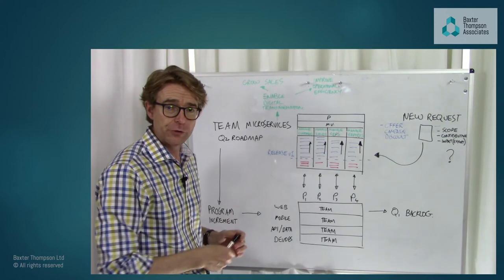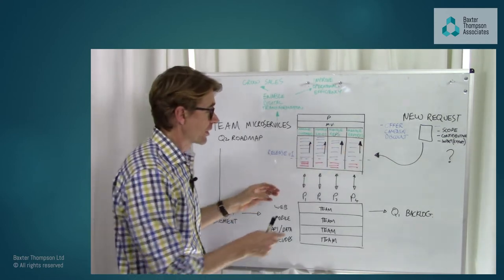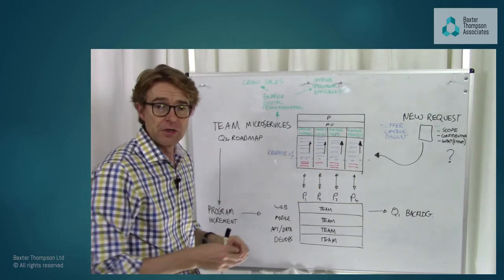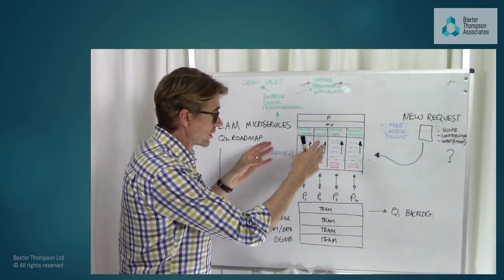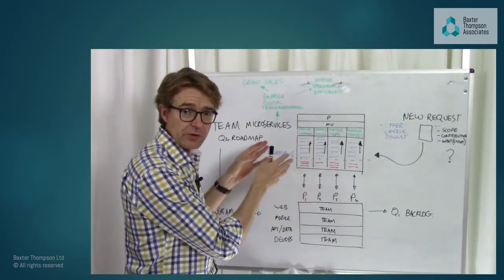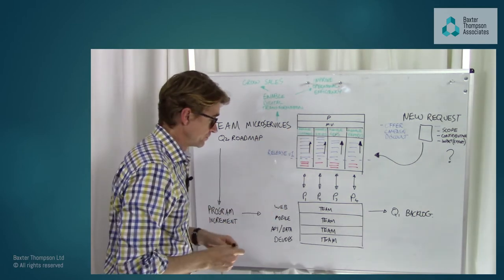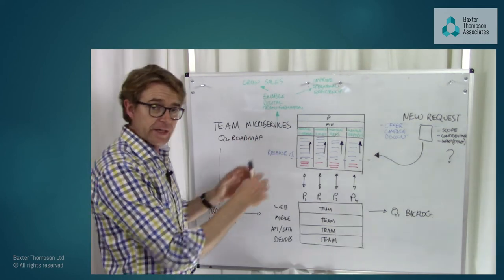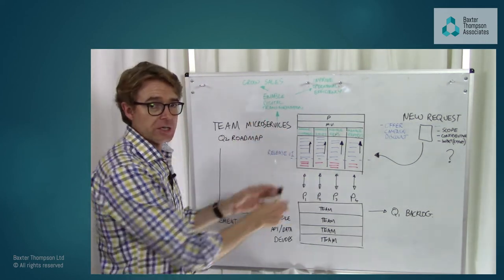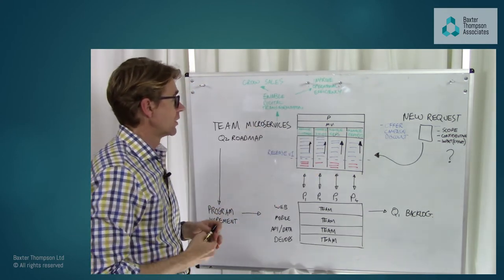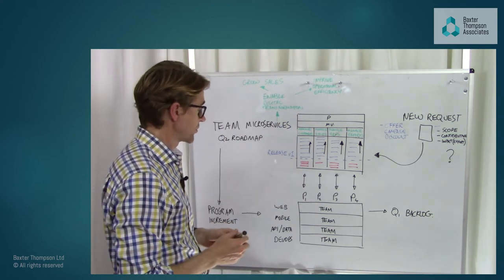They've decided they need four product managers to manage each of these silos, so they can best negotiate, corral, and manage the artifacts associated with each of those major capabilities. The idea is these product managers will help deliver each capability to enable the digital transformation that will grow sales and improve operational efficiency.